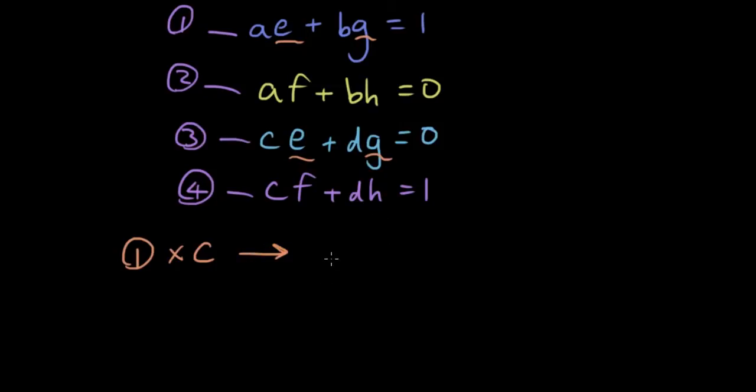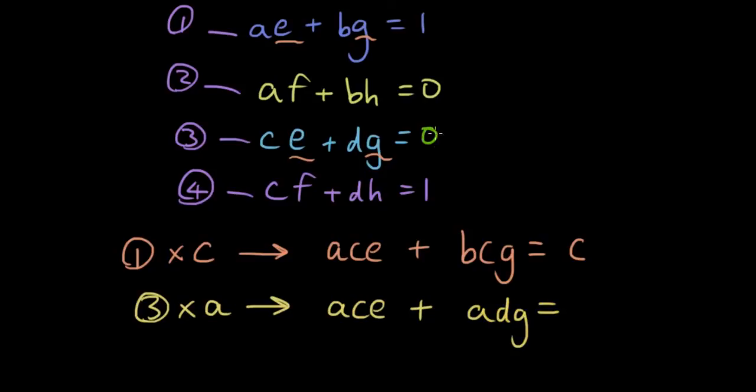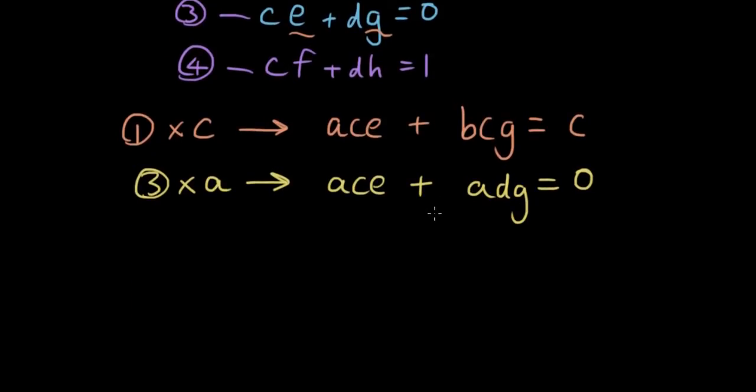So then I will end up with ACE plus BCG equals C, because I've multiplied by C on each term in the whole equation. And then I'm going to get equation 3 and multiply by A on both sides. So multiply C by A, I will get ACE plus ADG equals 0 times A, which is still 0.